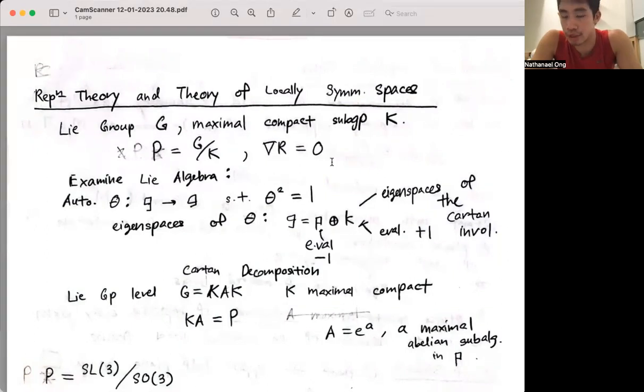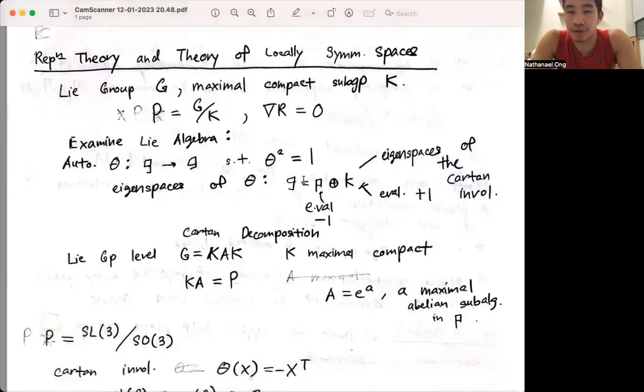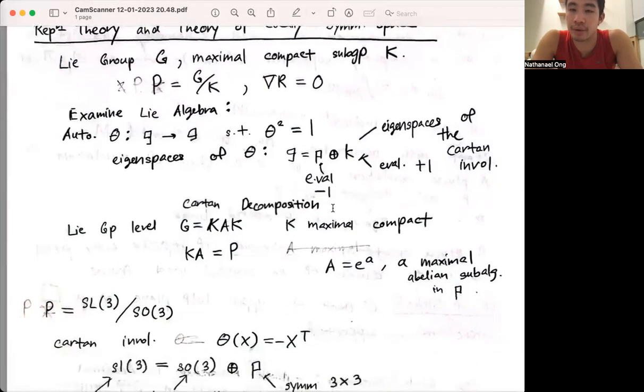The way to understand such a locally symmetric space is by examining the Lie algebras of both G and K. First, define an automorphism theta, mapping the Lie algebra of G to itself, such that theta squared equals 1. This causes the decomposition of the Lie algebra of G into P plus K, corresponding to the eigenspaces with eigenvalue minus 1 and plus 1, respectively.